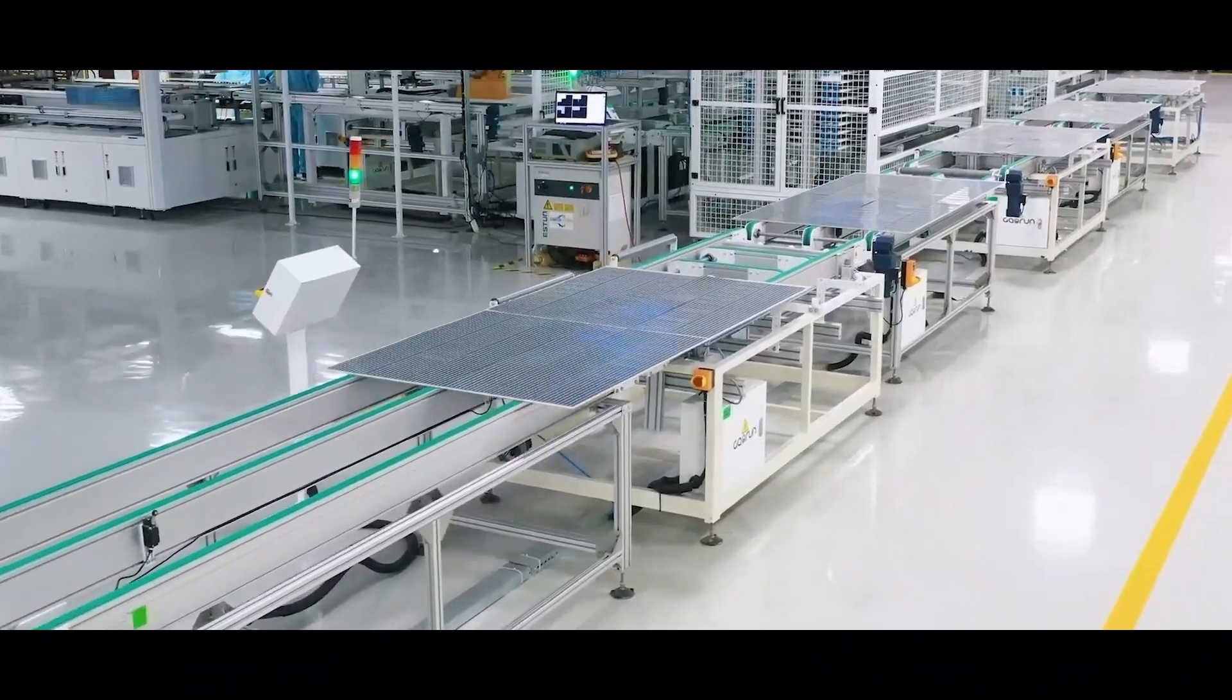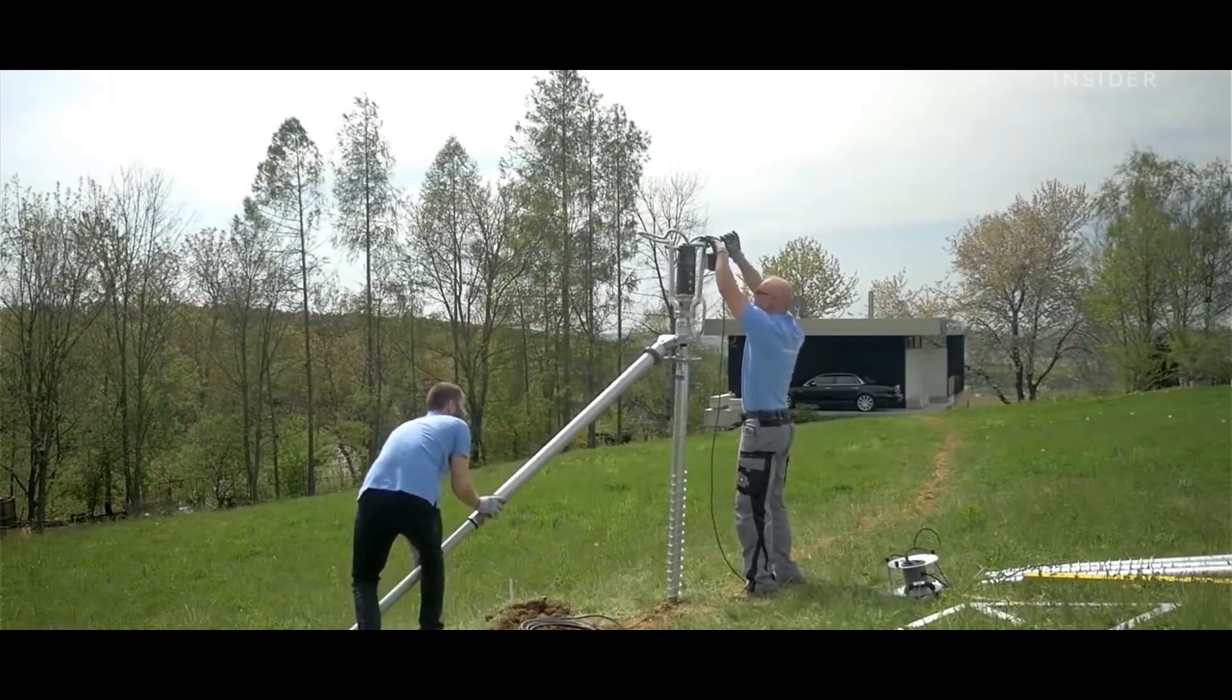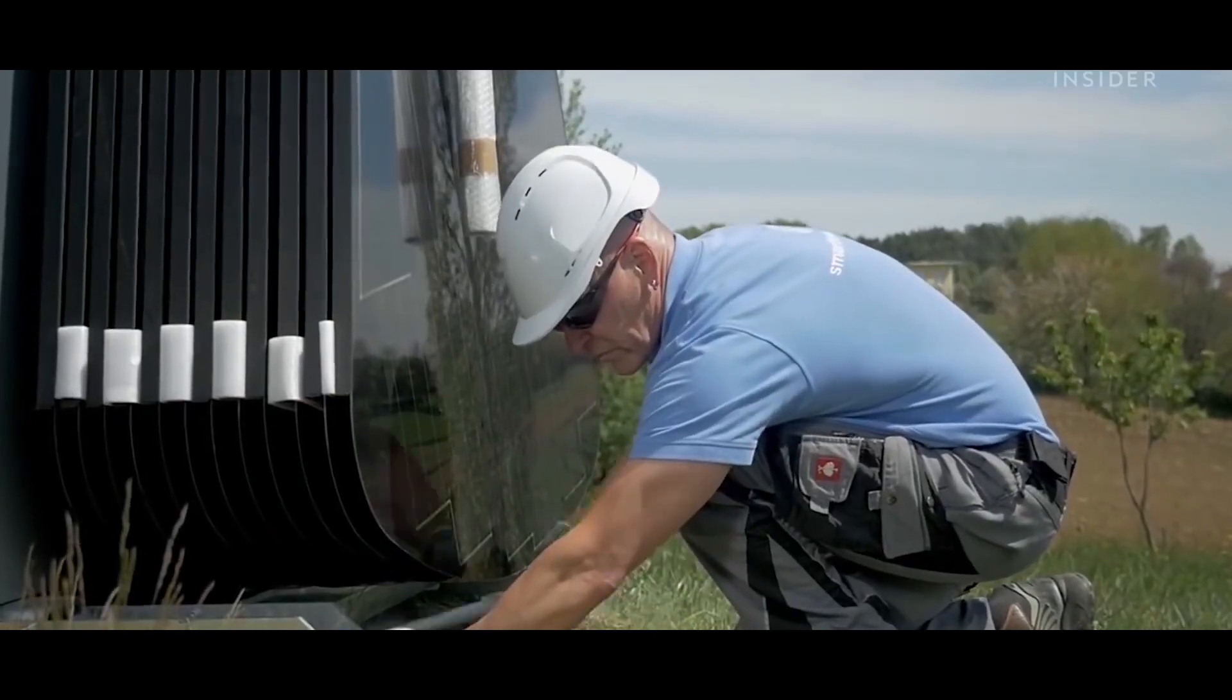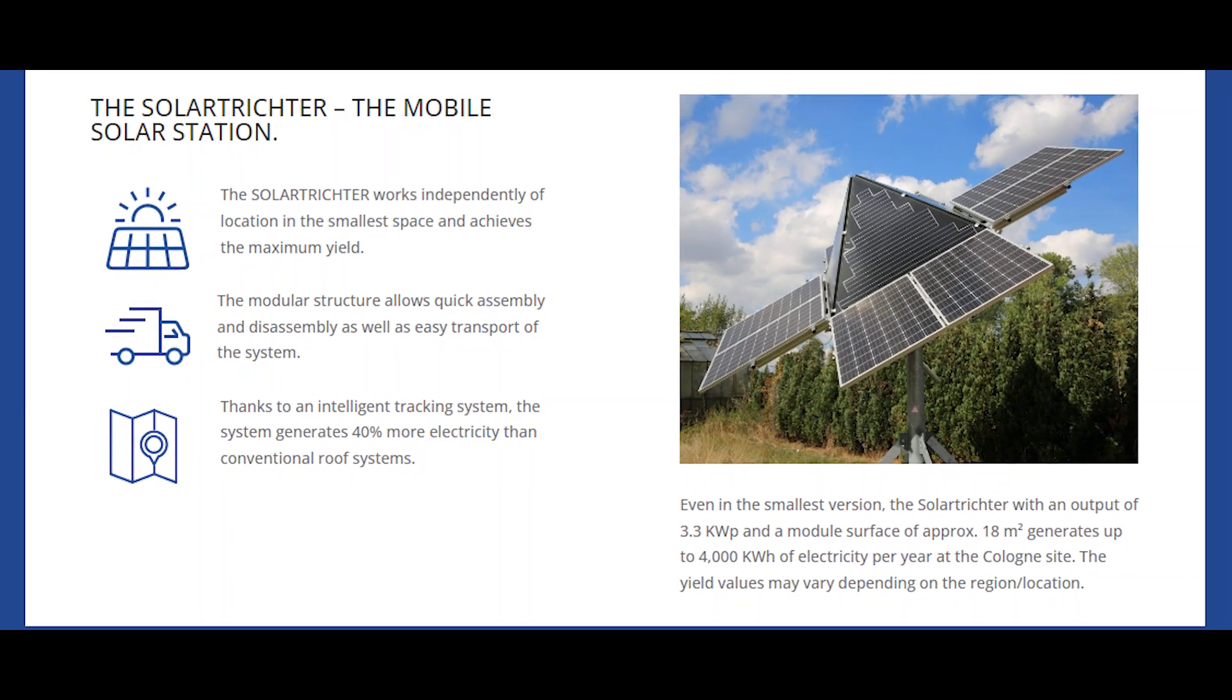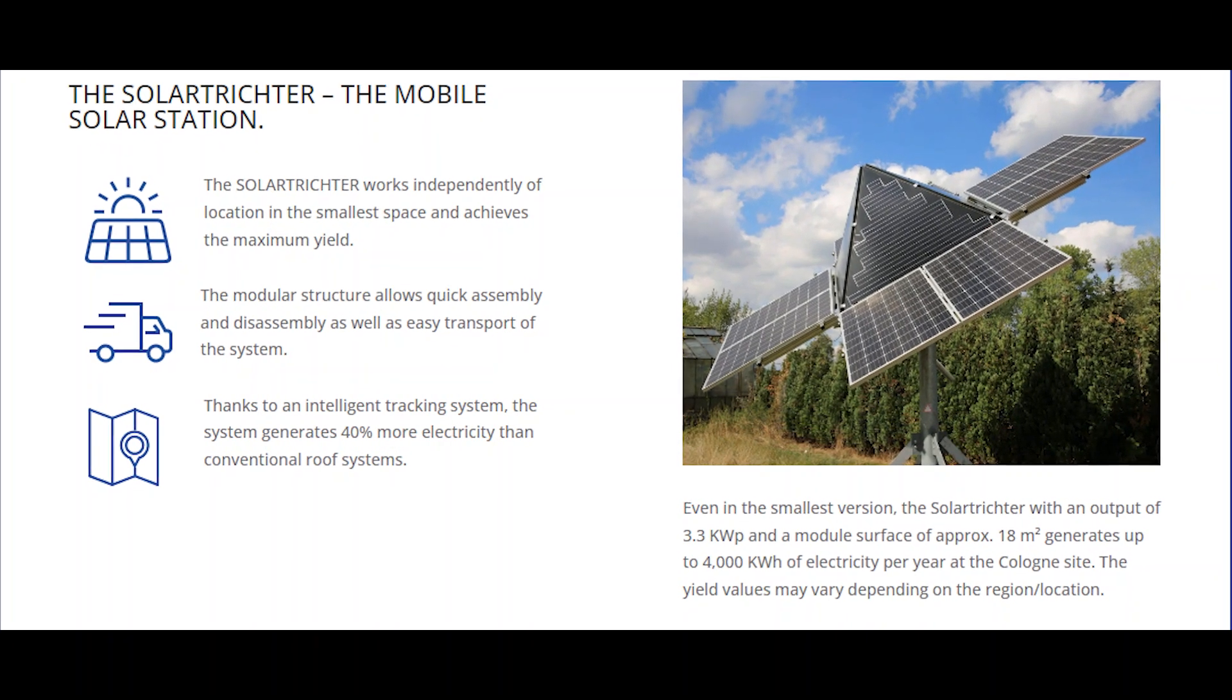According to the manufacturer, the solar funnel can be installed or removed within two hours. Therefore, the location of the system is not permanent, making it an ideal option for a mobile emergency voltage system.